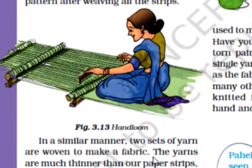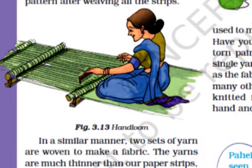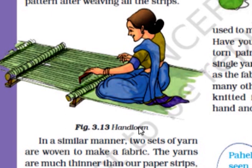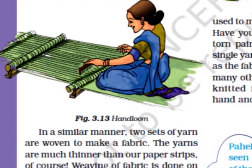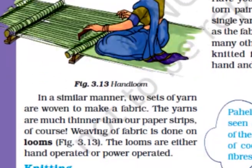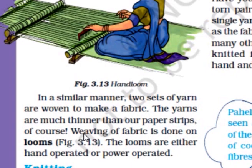The yarns are much thinner than our paper strips. Weaving of fabric is done on looms. This is a hand loom. The looms are either hand operated or power operated.